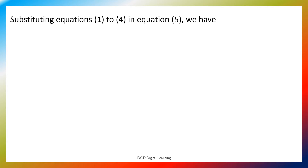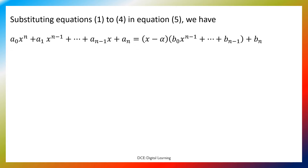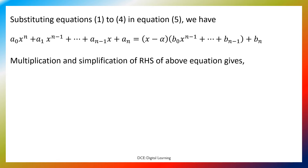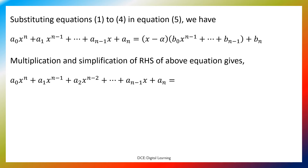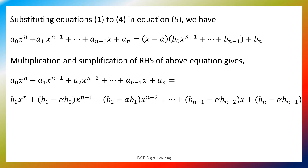Substituting equations 1 to 4 in equation 5, we have a0 x to the n plus a1 x to the n-1 plus and so on plus a(n-1) x plus an equals x minus alpha times b0 x to the n-1 plus and so on plus b(n-1) plus bn. Multiplication and simplification of the right-hand side gives: b0 x to the n plus (b1 minus alpha·b0) x to the n-1 plus (b2 minus alpha·b1) x to the n-2 plus and so on plus (b(n-1) minus alpha·b(n-2)) x plus (bn minus alpha·b(n-1)). This is equation 6.